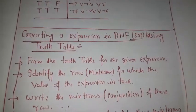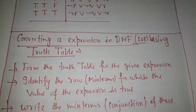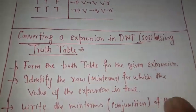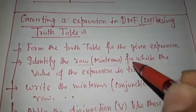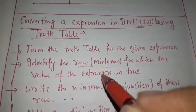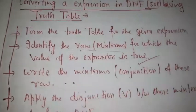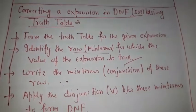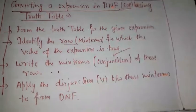Once the truth table for an expression is derived, we get the final column indicating the truth value. Then identify the rows for which the truth value of the expression is true — that is, identify the min terms for those rows. Write the min terms (conjunctive terms) for those rows, then apply the disjunction between them to form the DNF.